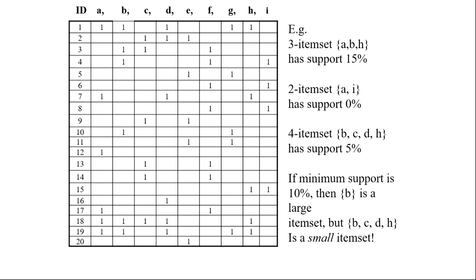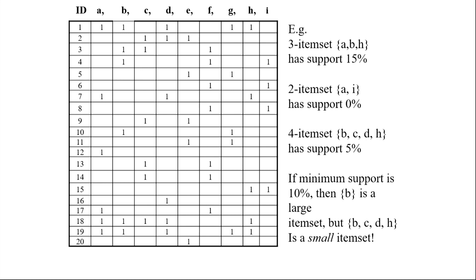Now, let us look at which are the three-item sets. If we look at product combinations, the three-item set ABH occurs in transaction IDs 1, 18, and 19 — so in these three cases A, B, and H appear together. ABH is a 3-item set because three items are there. Its support is 3 out of 20, which is 15 percent. Similarly, A comma I is a two-item set whose support is 0 percent — it does not occur anywhere.